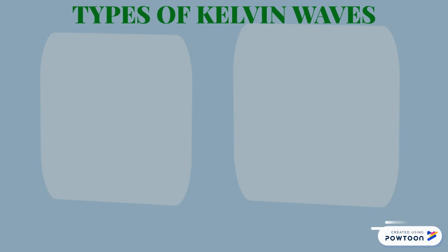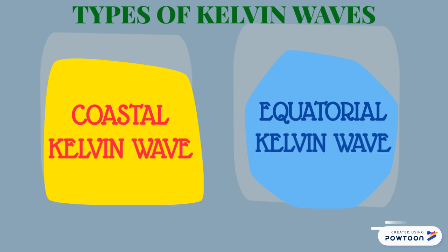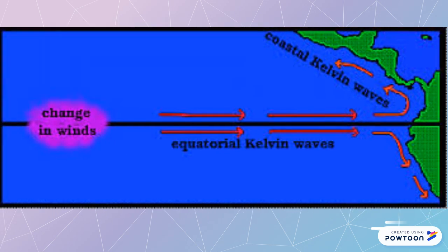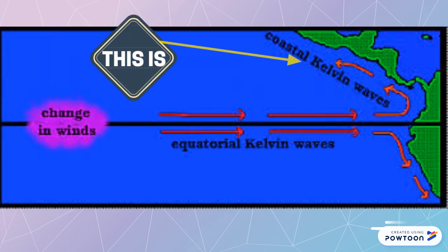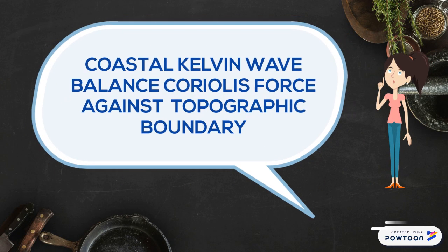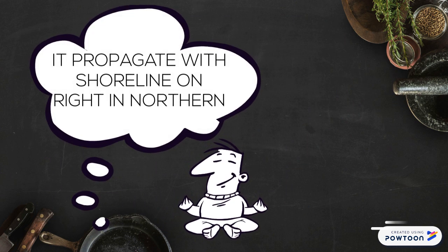There are two types of Kelvin waves. Coastal Kelvin waves balance the Coriolis force against a topographic boundary. They propagate with the shoreline on the right in the Northern Hemisphere and on the left in the Southern Hemisphere.